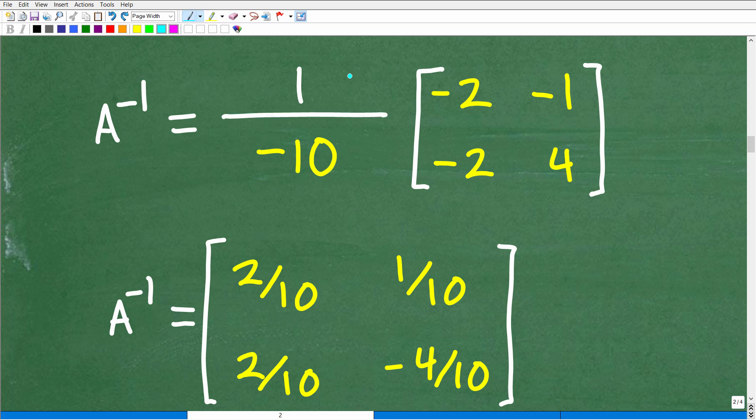Let me get back to this marker. Okay, so we're going to take this 1 over negative 10, and we're going to distribute this in to each of the entries. Okay, so this is scalar multiplication. Again...